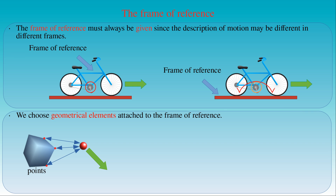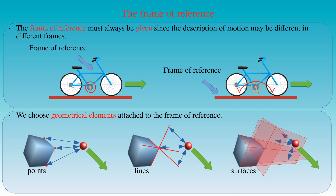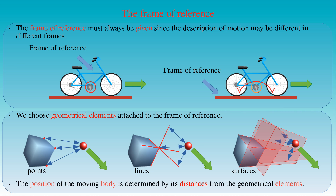We can also use lines oriented along the edges of the object and measure the minimal distances of the moving ball from these lines — this method gives the unique position of the ball as well. Planes can also be attached to the surface of the object; then the minimal distances of these planes from the ball provide its unique position with respect to the object. Normally we use some combination of different geometrical elements attached to the frame of reference and measure the distances of the body from these elements.